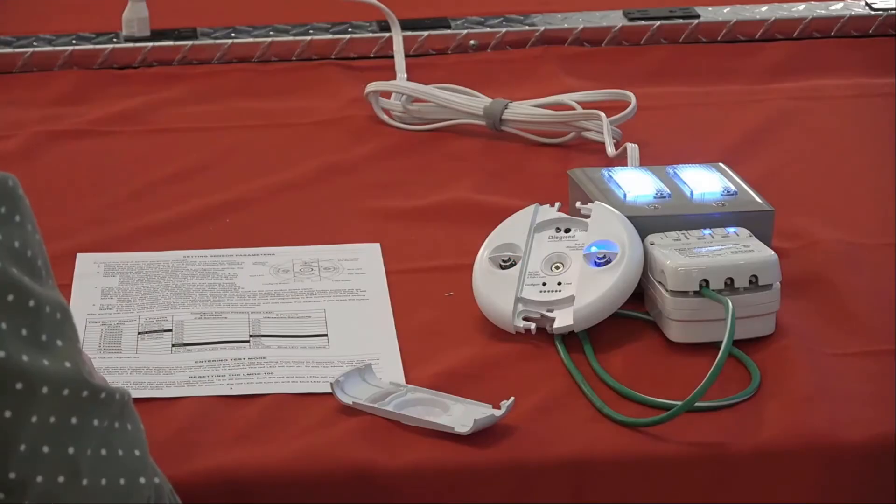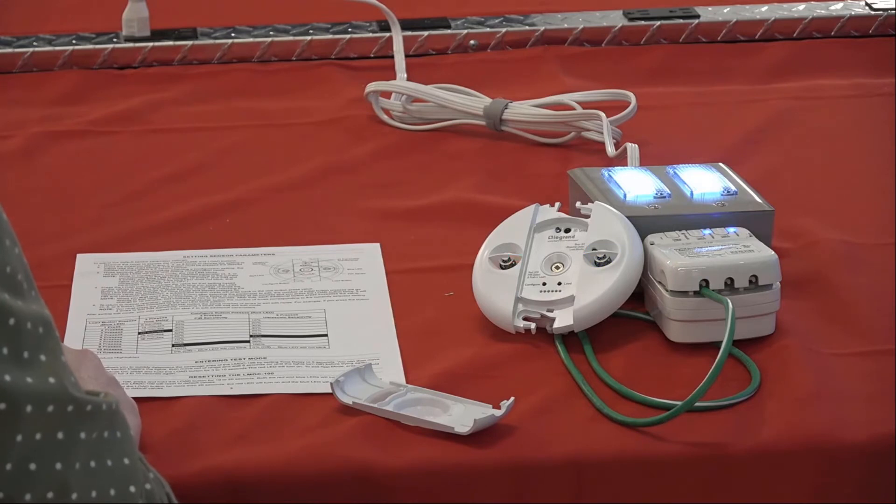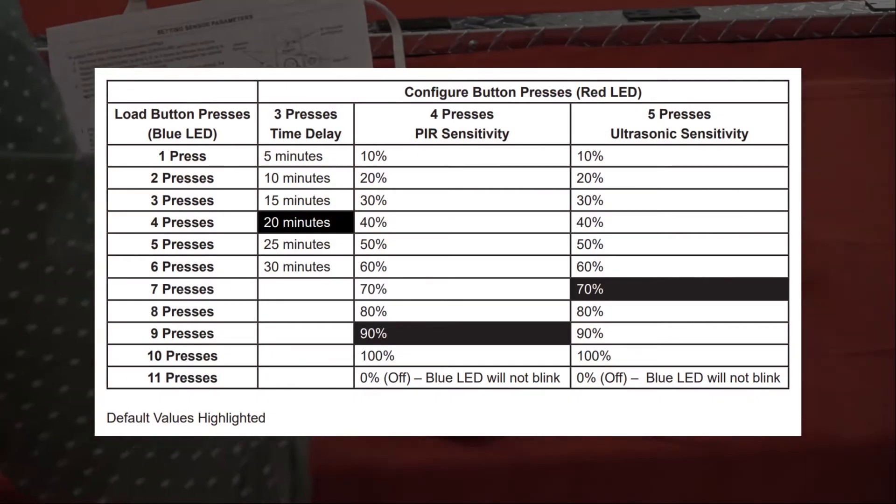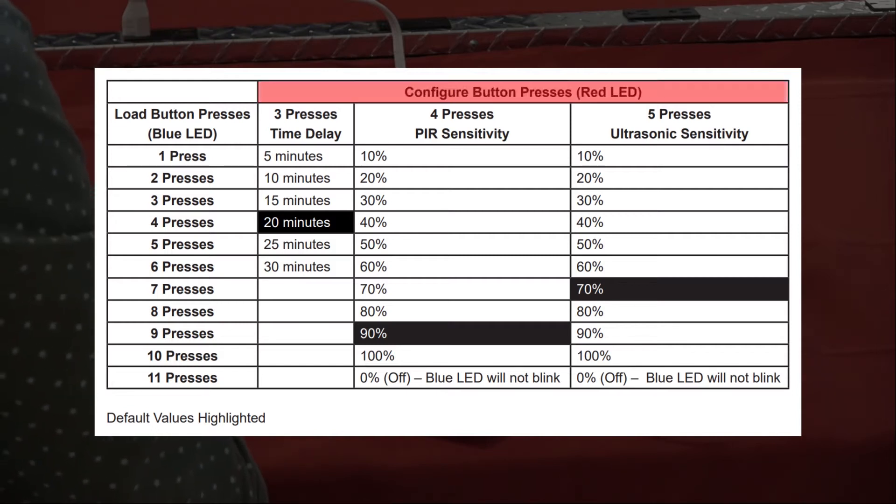Let's first talk about parameters. To change a parameter, you must first select it using the configuration button. In the installation instructions available on our website, you will find a table in the setting sensor parameter section. On the table, the number of configuration button presses required to select each setting are shown.